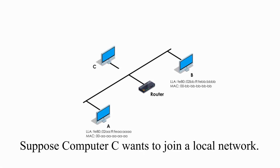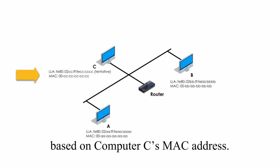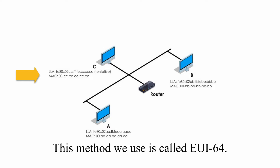Suppose Computer C wants to join a local network. One tentative link-local unicast address is generated based on Computer C's MAC address. The method used is called EUI64. This is step 1.